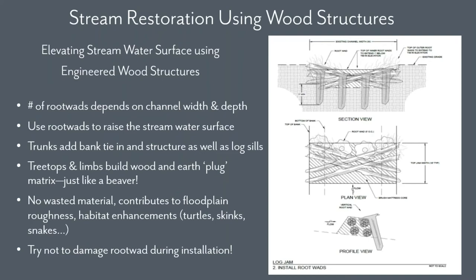Any surplus material goes out into the floodplain where it supports other organisms and also increases the resistance to flow — the friction of the floodplain — which is desirable from a sustainability perspective. Typically, depending on the size of the stream channel being restored and the floodplain footprint, we harvest 20 to 30% of the standing stock of trees. We start with undesirable trees and trees that are at risk, then go where we need to develop enough building material.